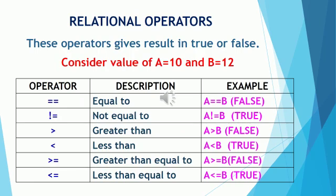Now let's study relational operators. These operators are used to compare two values and give a result of true or false. Comparison means checking whether the first value is greater than the second, or the second is less than the first, or both are equal, or both are unequal. Java has provided six types of relational operators. Double equals is used for checking equality between two values. Not equal to is used for checking whether one value is not equal to another. We also have greater than. Remember that relational operators always give a result of true or false.